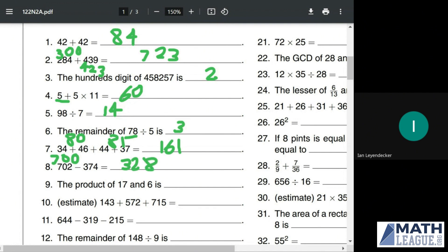The product of 17 and 6 is blank. 6 times 10 is 60. 6 times 7 is 42 for a sum of 102.